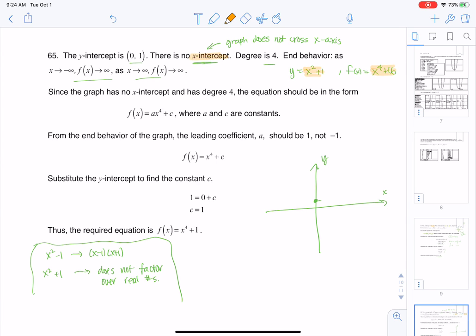You could factor it over imaginary numbers, but where I'm going is if I'm told there are no x-intercepts, then I'm looking at some kind of factor of the form x² + 1. Or since the degree is 4 here, I'm looking at x⁴ + 1, or x⁴ + 7, some form of that. So getting back to it, I had a y-intercept at (0, 1), no x-intercepts, the degree is 4. For my end behavior, let's see what we've got.